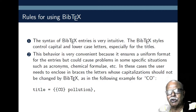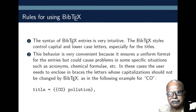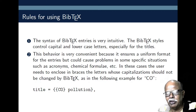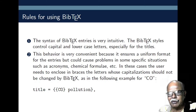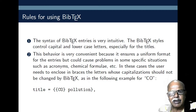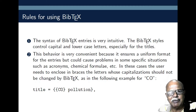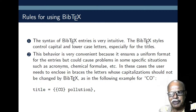BibTeX styles control capital and lowercase letters, especially for article titles and authors. This behavior ensures a uniform format for all entries, but in certain cases it may pose a problem for abbreviations. For example, consider carbon monoxide CO. If you use it as such, the first character C will be capitalized, but the next character O — even if written as capital — will be available only as a lowercase letter. To avoid this problem, you may enclose CO within curly braces.